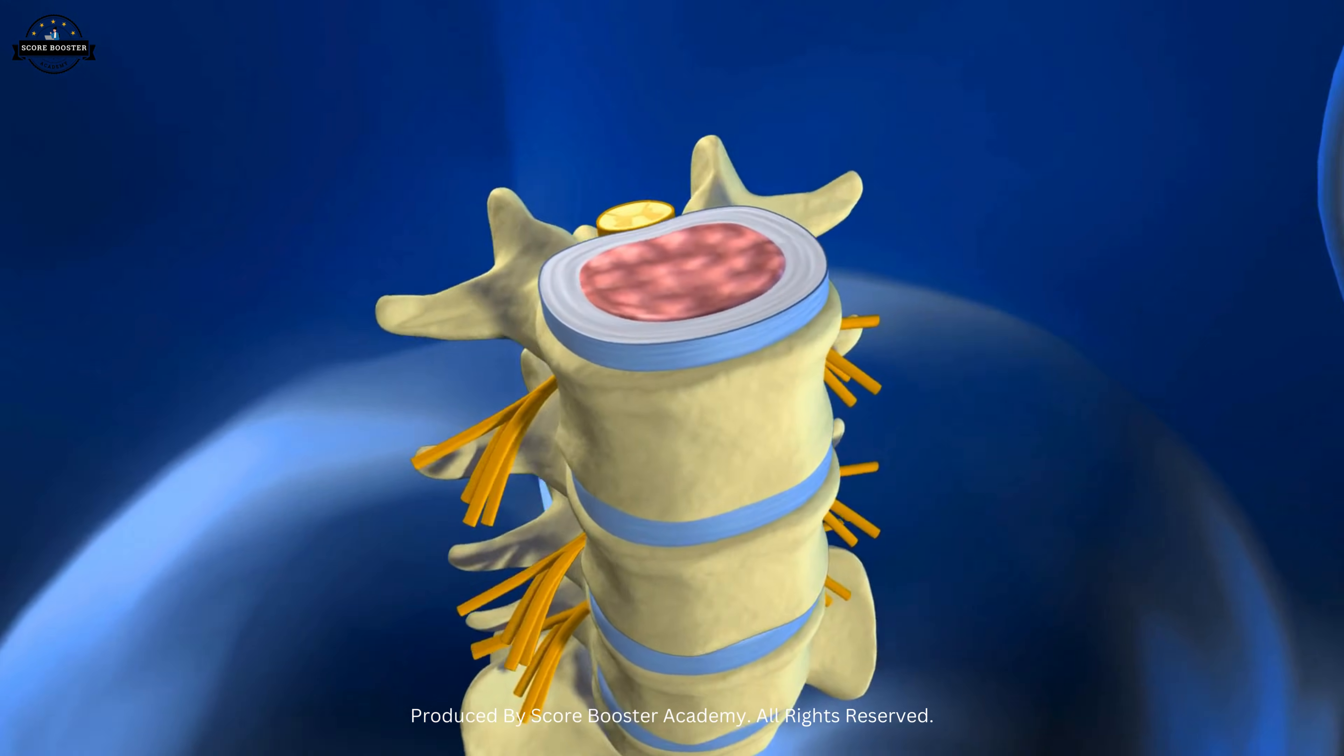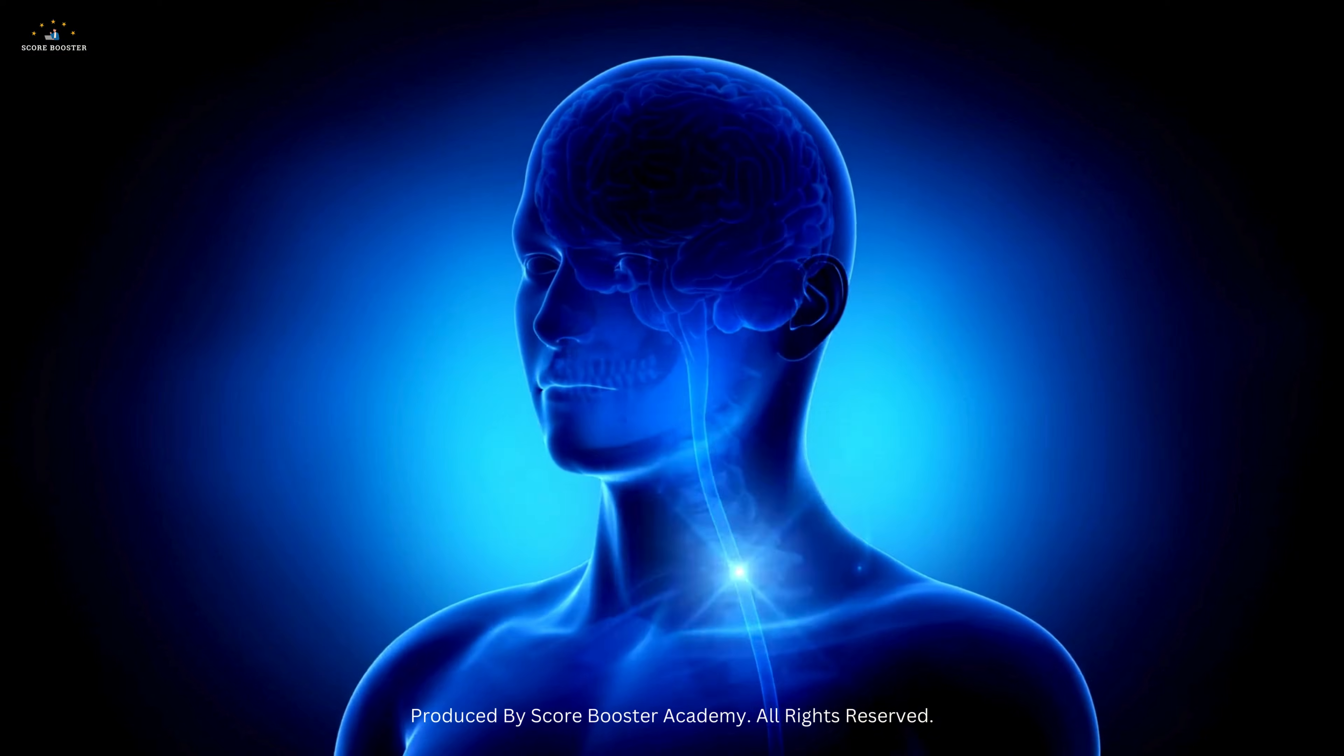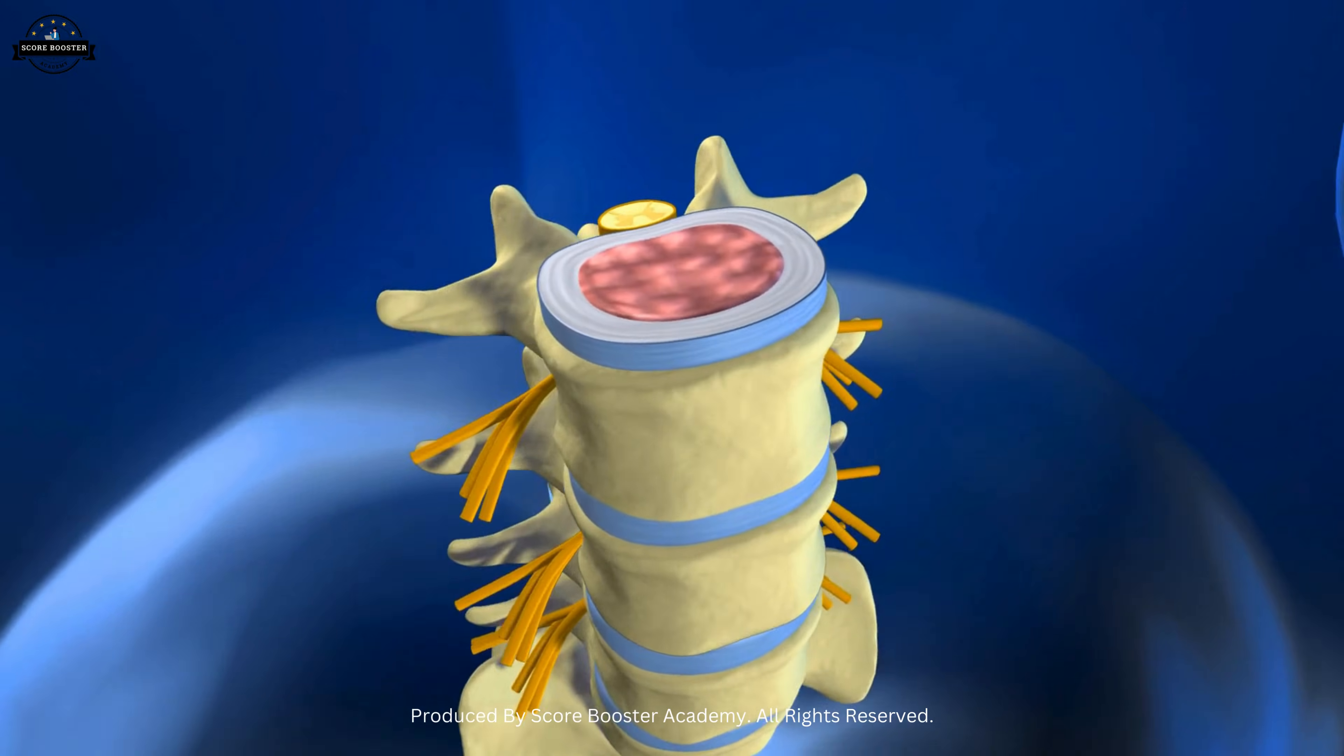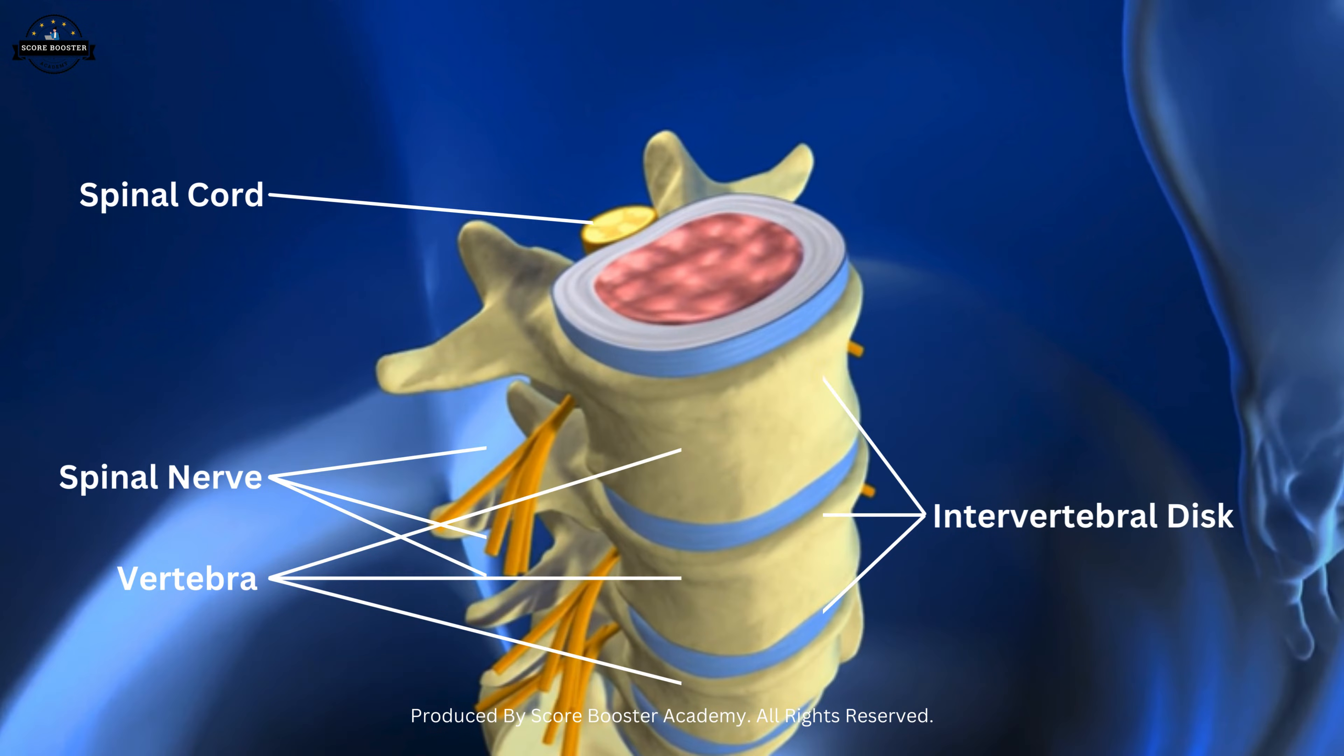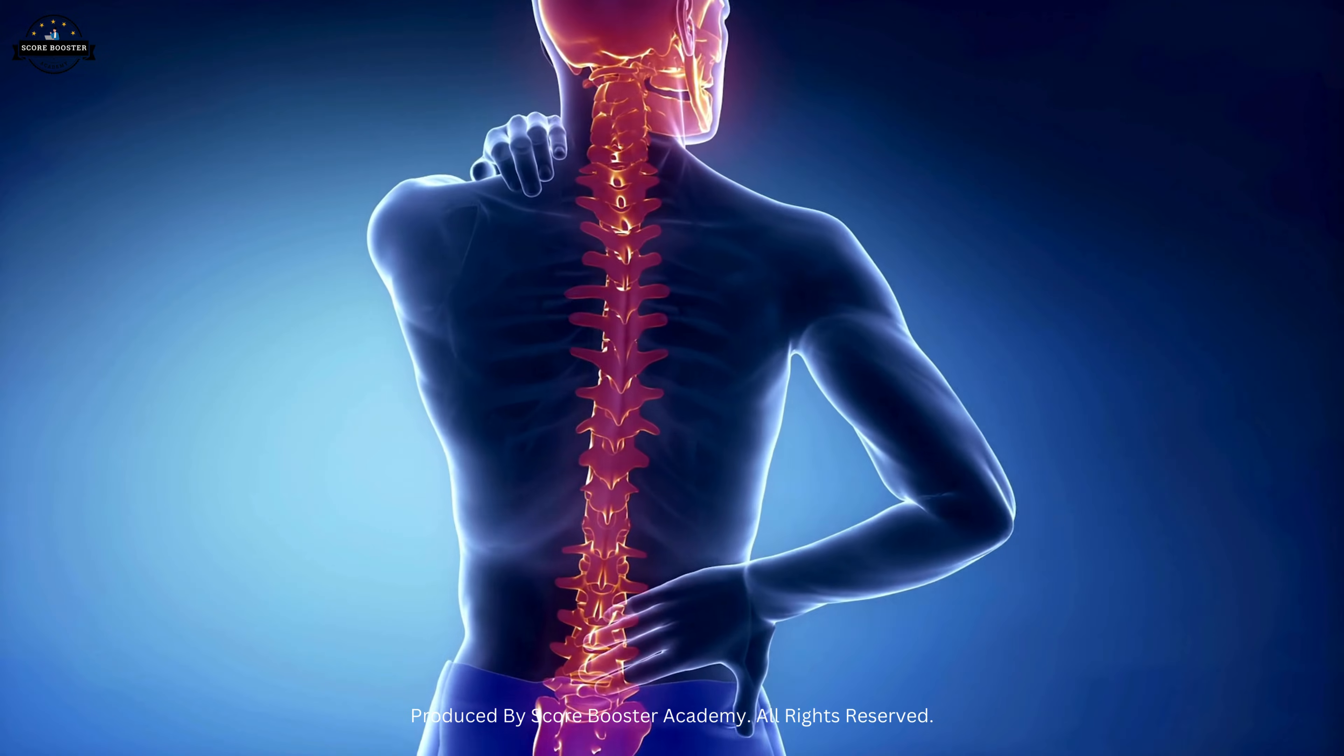Moving beyond the brain, the spinal cord is another crucial component of the central nervous system. It acts as a conduit for signals between the brain and the rest of the body. Protected by the vertebral column, the spinal cord also coordinates reflexes, which are quick, automatic responses to stimuli.